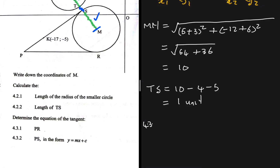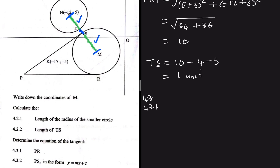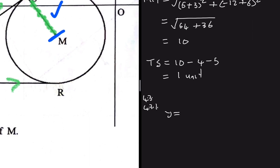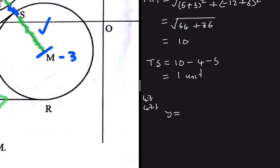For question 4.3, we need to determine the equation of tangent PR. We are told PR is parallel to the x-axis, so the gradient is 0. We just need to find the y-value. The y-coordinate of center M is −3, and point R and center M share the same x-coordinate since PR is parallel to the x-axis.